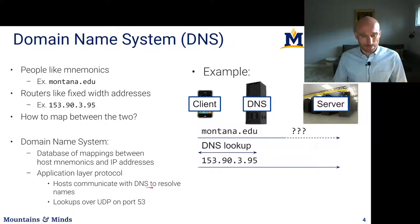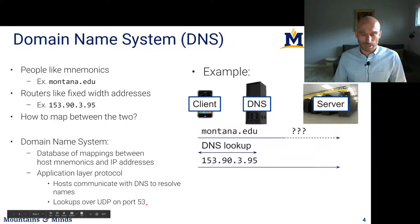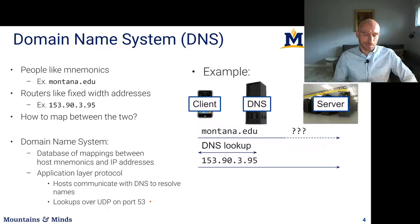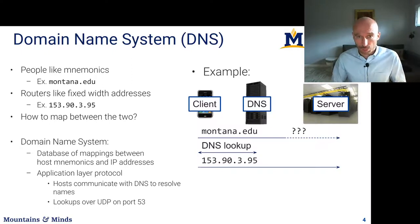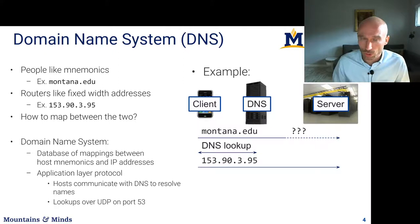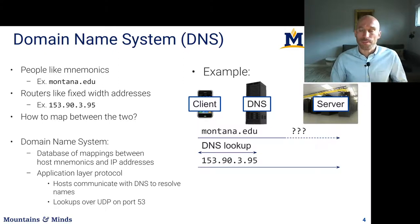Lookups to DNS are done over UDP on port 53. There are special port assignments: SMTP uses port 25 for unsecured communications and 587 for secure; DNS uses port 53. All these ports are below port 1024 — these low port numbers have been historically reserved for particular protocols, which makes it easy for firewalls to open just those ports to allow just those protocols to function.